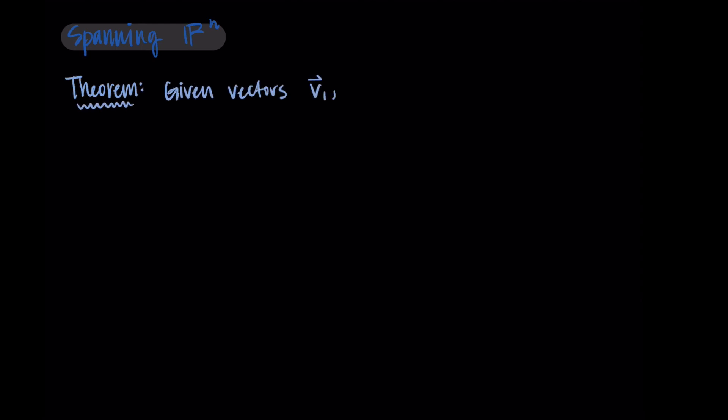First, let's suppose that we are given the vectors V1 through Vn, and these are elements of Rn. Notice here that I'm using n and n really intentionally. This means that if we put these vectors into a matrix, we would have n rows since we're in Rn, and n columns since we have n vectors. So we have a square matrix, n by n.